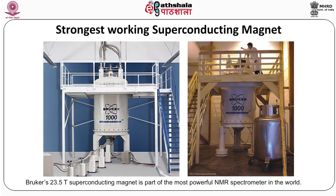The strongest working superconducting magnet in the world is a Bruker 23.5 tesla superconducting magnet, which is part of the most powerful NMR spectrometer in the world, located at Lyon in France.